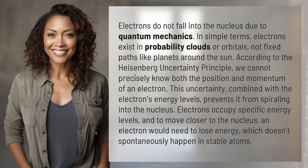According to the Heisenberg Uncertainty Principle, we cannot precisely know both the position and momentum of an electron. This uncertainty, combined with the electron's energy levels, prevents it from spiraling into the nucleus.